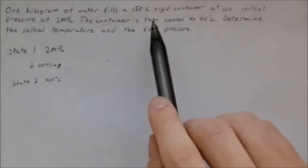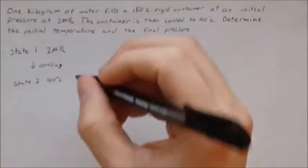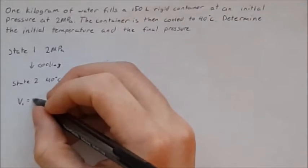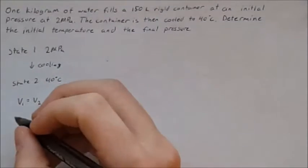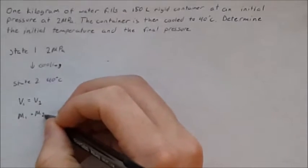So we know we have one kilogram of water and a 150 liter rigid container. So this is a rigid container which means that the volume at state one is going to equal the volume at state two. And we can assume that the mass at one will also be the same as mass in two.